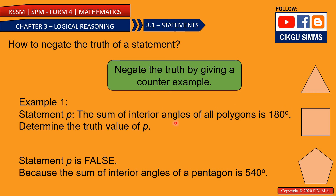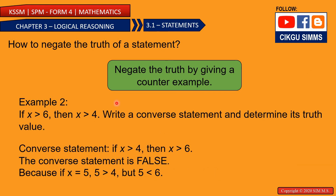So when you want to negate a statement — you want to make it false, you want to prove that it's false — you need to give a counter-example. Here is another example: if X is greater than 6, then X is greater than 4. Write a converse statement and determine its truth value. First, you need to write the converse statement.